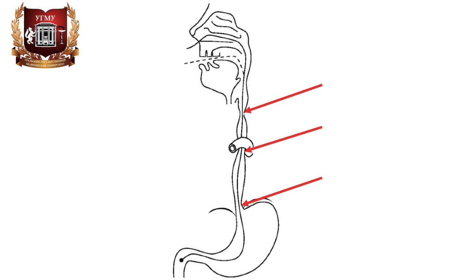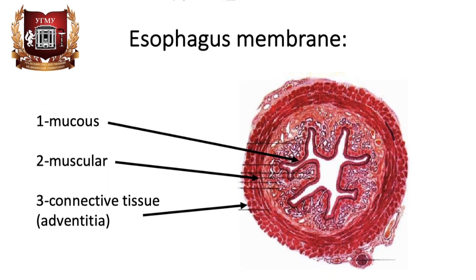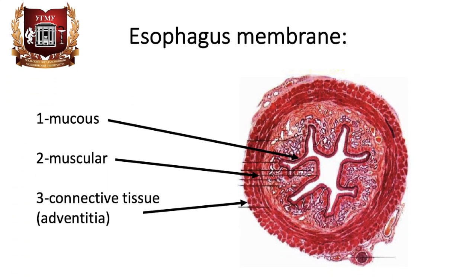The wall of the esophagus has a thickness of about four millimeters. There are the following membranes: the inner mucous membrane, the middle muscular membrane, and the outer connective tissue membrane.